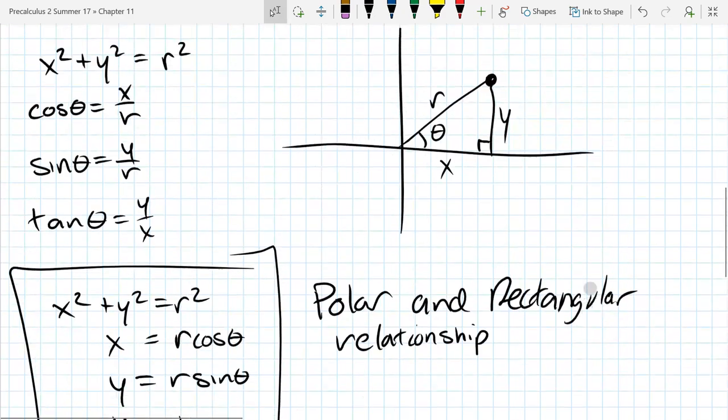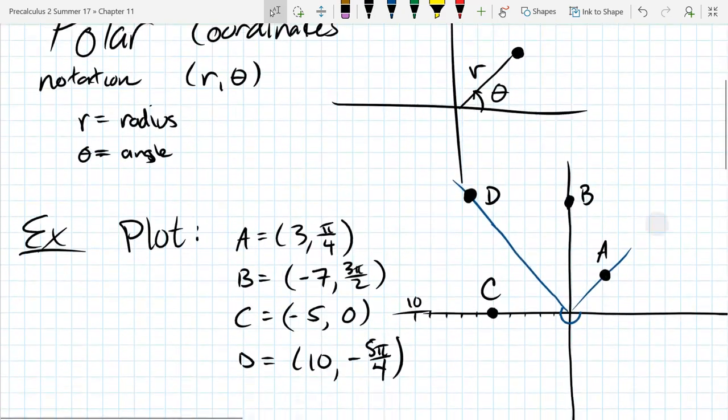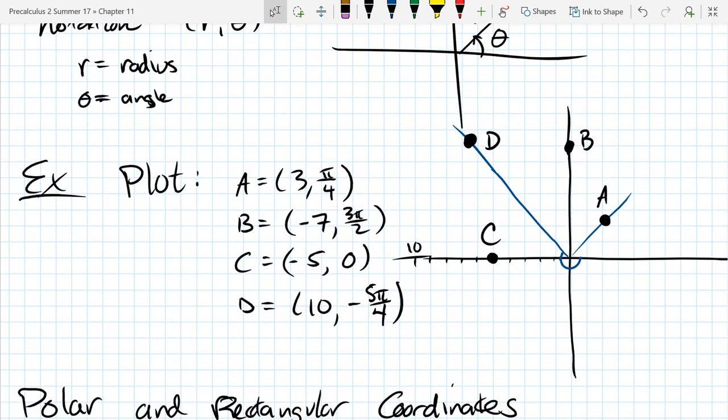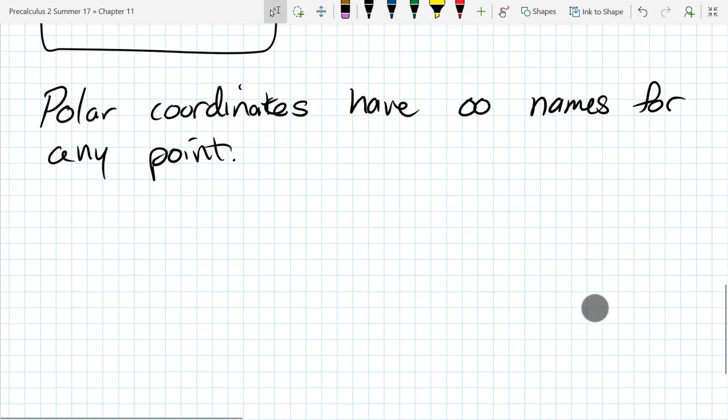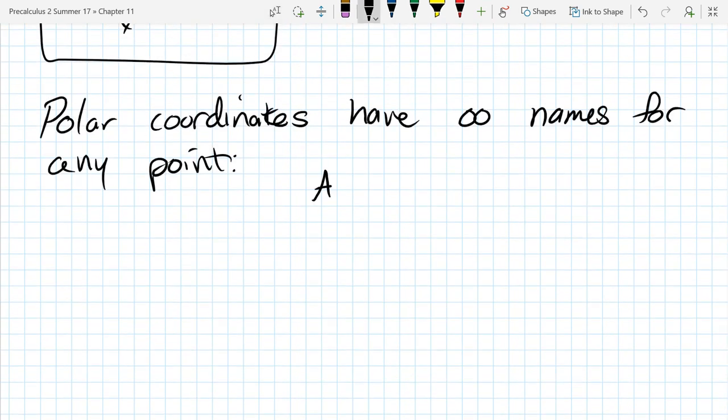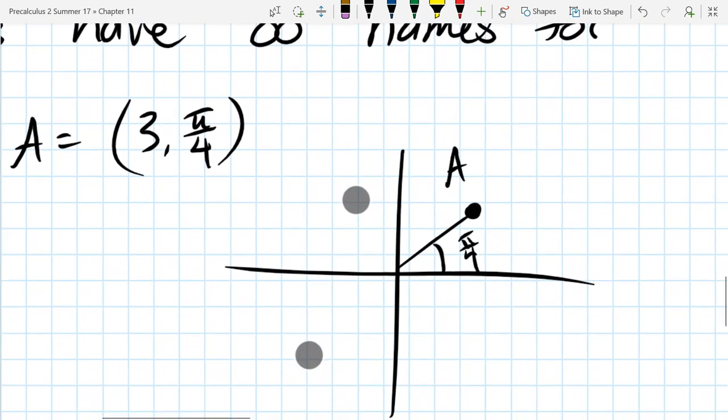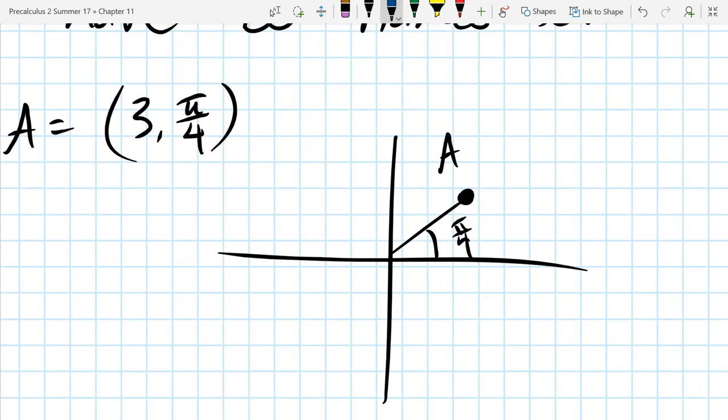Polar coordinates have not just one or two but infinite names for any point. So let's take it easy. We'll just take a point A we looked at before: (3, π/4). We're just going to look for different names. So we saw how to graph this earlier. Pretty easy to graph. Just going to do a real rough sketch. So this is (3, π/4). There's our angle π/4 and go out 3. So there's our point A right there.